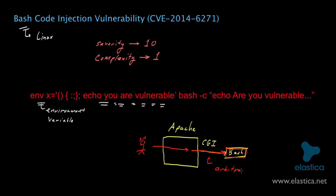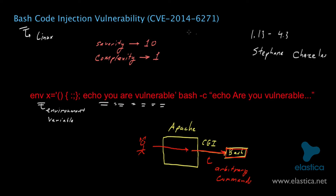What's frightening is that this vulnerability has been present in Bash for 22 years, dating back to version 1.13 of Bash. The vulnerability was discovered in Bash version 4.3 by Stefan Chazelis. It has a Common Vulnerabilities and Exposures, or CVE, number of CVE-2014-6271.